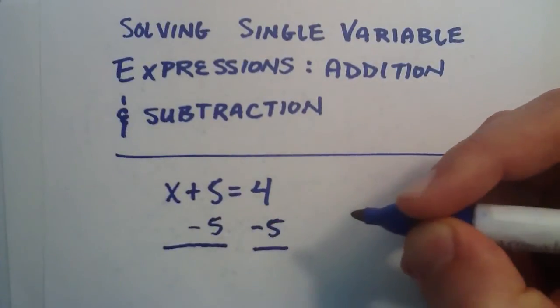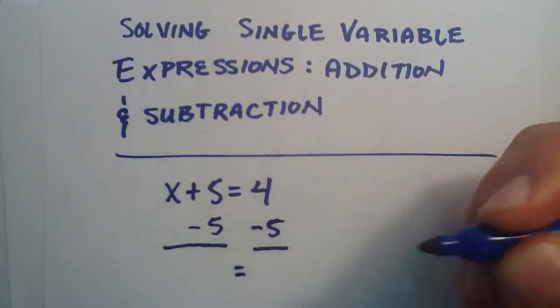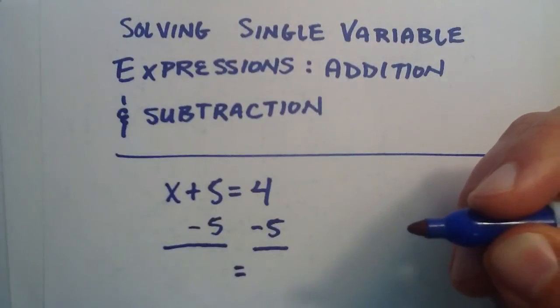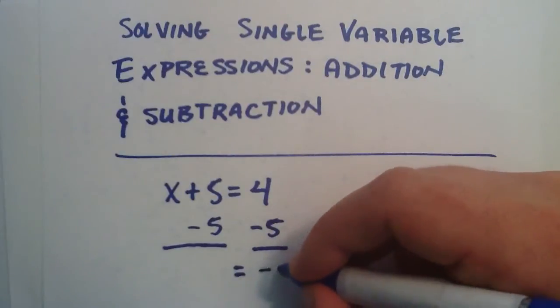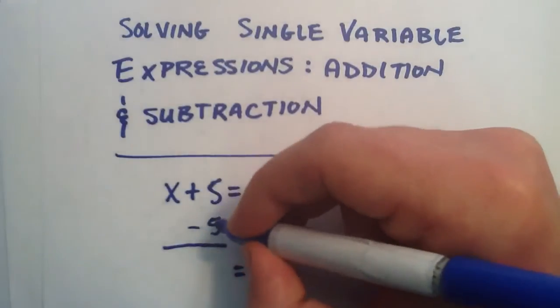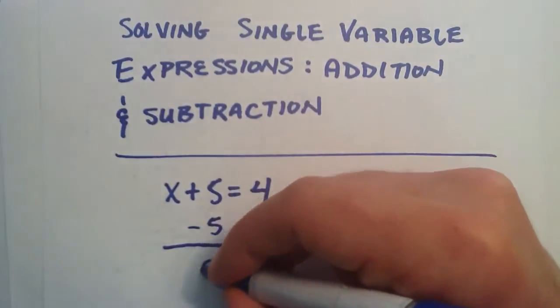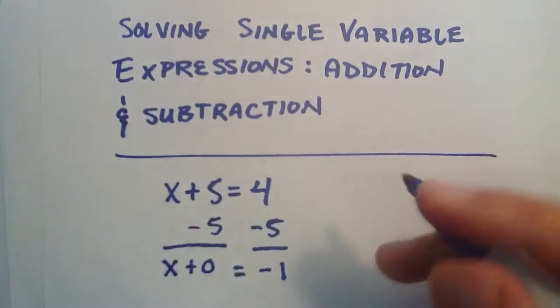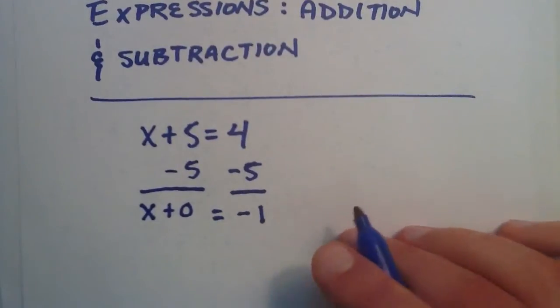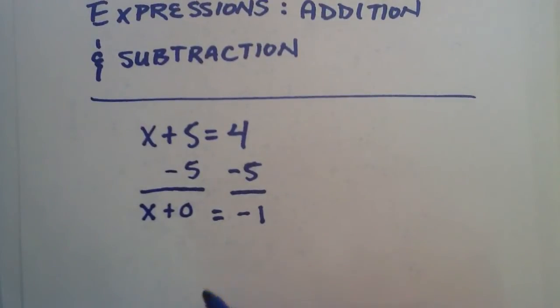So, because we took the same amount from both sides, our answers should have the same value. And 4 take away 5 gives us a minus 1. 5 take away 5 gives us a 0. And we didn't add or take away any x's, so that stays the same. So,